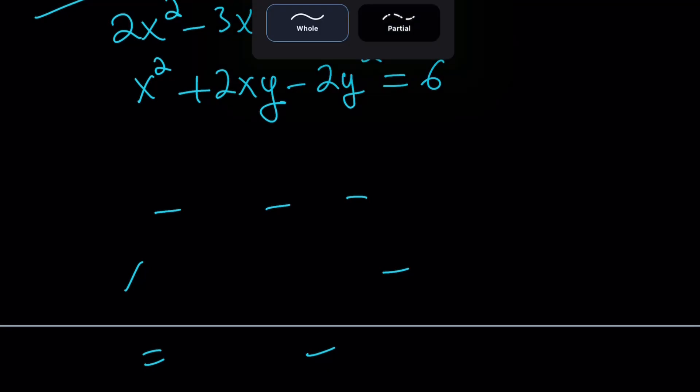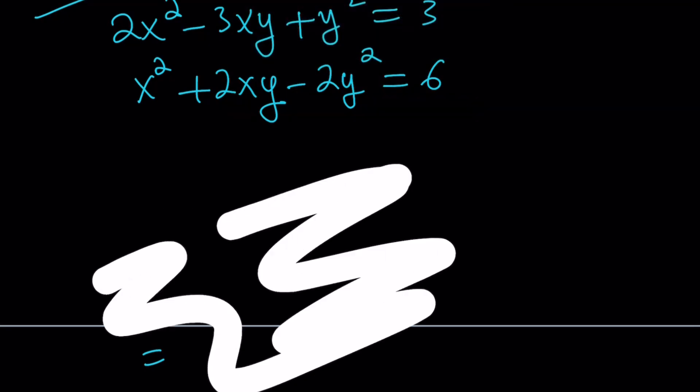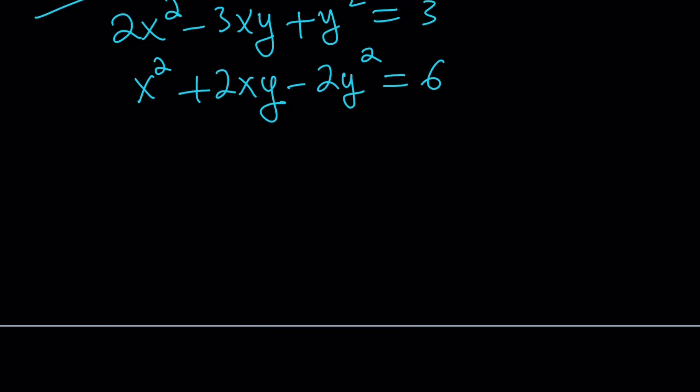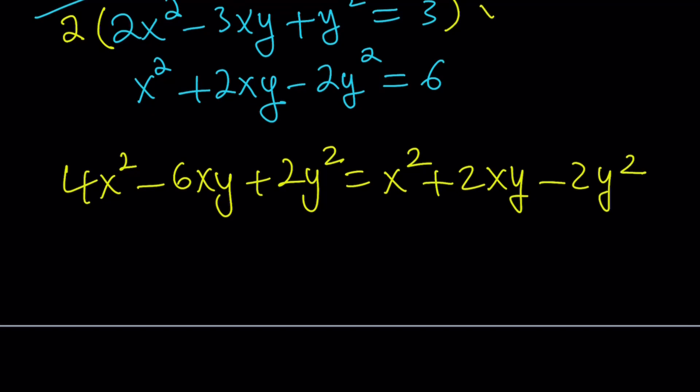I'm going to make my eraser bigger. So, what I can do here is get rid of the numbers and still get 0. So, that's the whole idea. And that can be done by multiplying the first equation by 2 which is going to give us a 6 and then setting these equal to each other. You can also subtract the second equation and it will be the same thing but I just like setting them equal to each other. So, 4x² - 6xy + 2y² = 6 which is equal to x² + 2xy - 2y². Get the idea? They're both equal to 6 so they are equal.